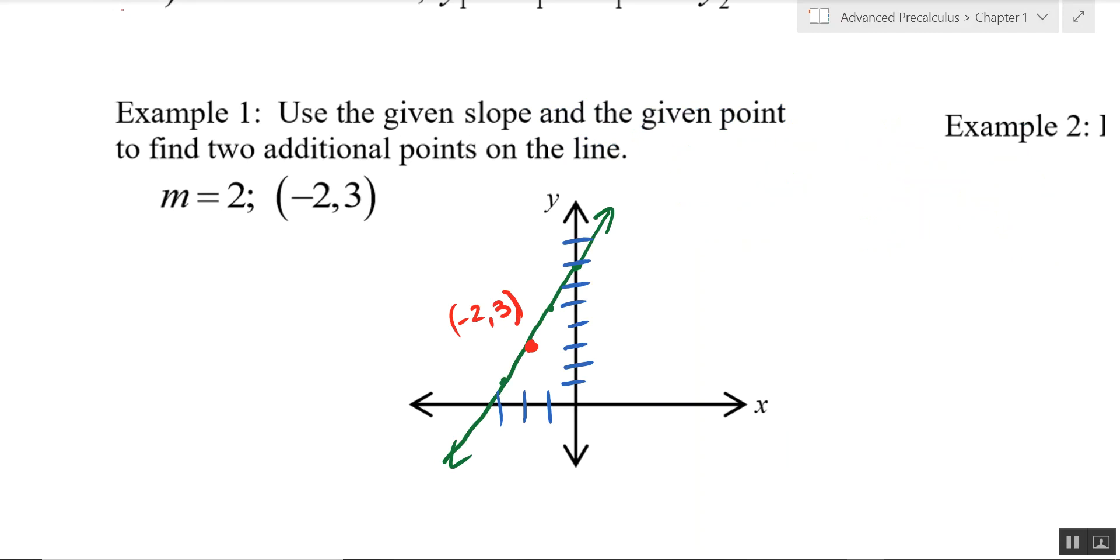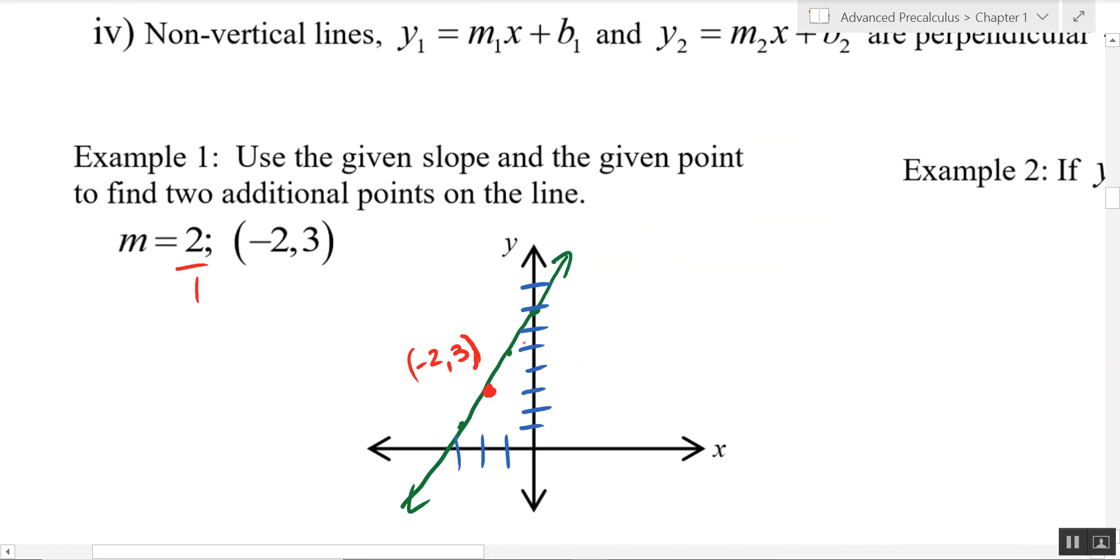Alright, next page. On example one, it says use the given slope and given point to find two additional points on the line. You can do this algebraically or you can do it graphically. We'll do a little bit of a combination. I've got this point plotted negative 2, 3. And we know the slope is 2. And again, that means 2 over 1, meaning we're going to go up 2 over 1. From our point negative 2, 3, we're going to go up 2 over 1.